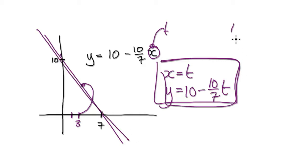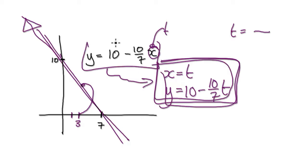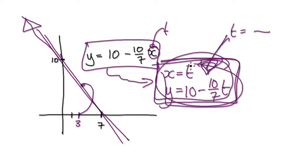So when t equals a negative number, you're actually going in this direction. And by the way, there are lots of ways of generating these parametric equations for this line. So there will be more than one answer. This is just the easiest way.